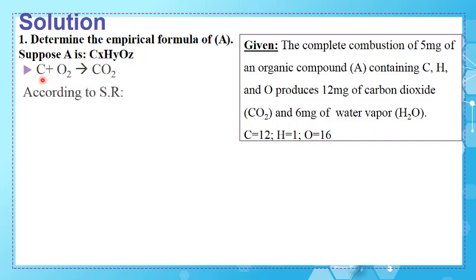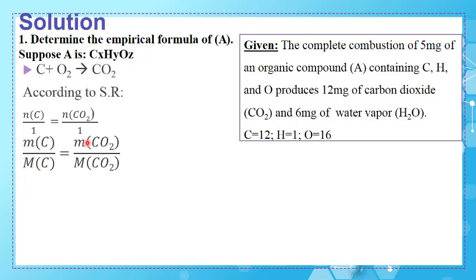According to the stoichiometry of this reaction, the number of moles of carbon over 1 equals the number of moles of CO₂ over 1. Replacing moles with mass over molar mass: mass of carbon over 12 equals mass of CO₂ over 44. The mass of CO₂ is 12 mg (given), and the molar mass of CO₂ is 12 + 16×2 = 44. Solving, the mass of carbon is 3.27 mg.